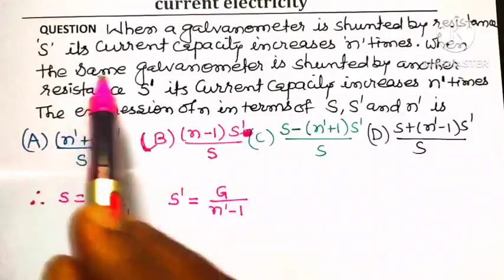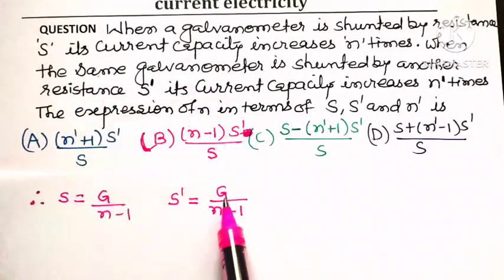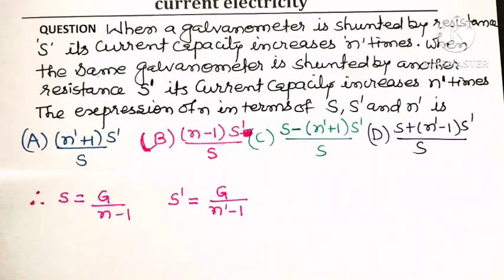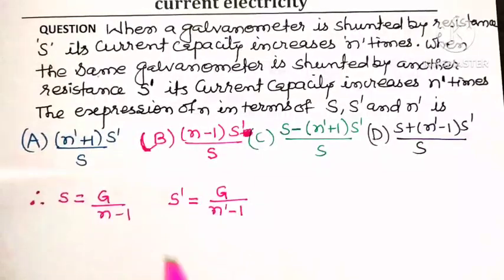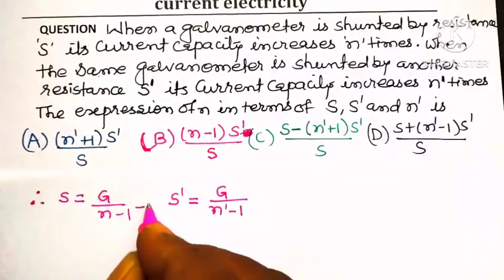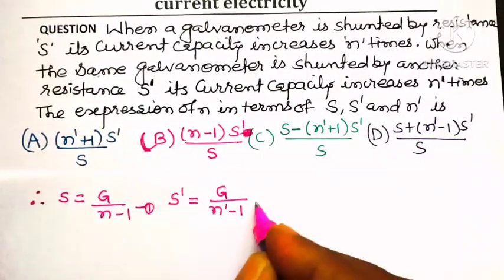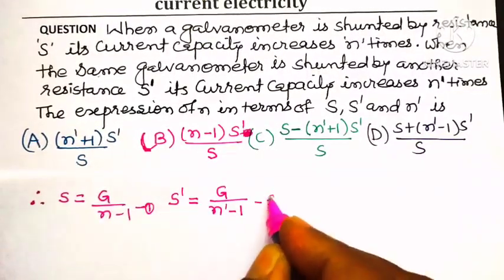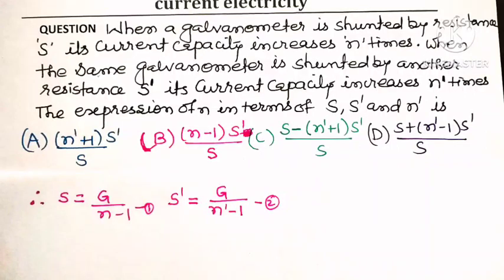Because it is the same galvanometer, the resistance of the galvanometer G remains the same in both cases. So we now have two equations: Equation 1: S = G/(n - 1), and Equation 2: S' = G/(n' - 1).